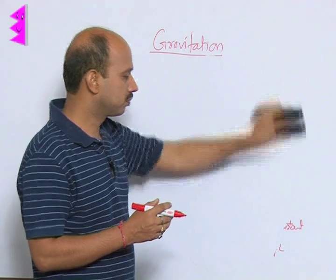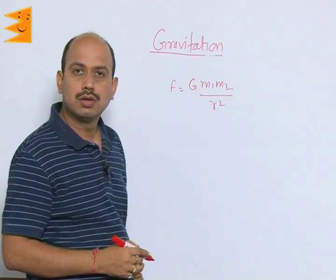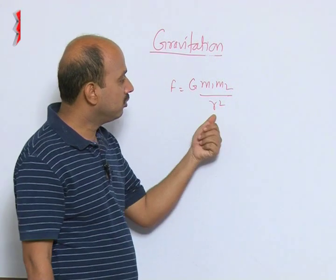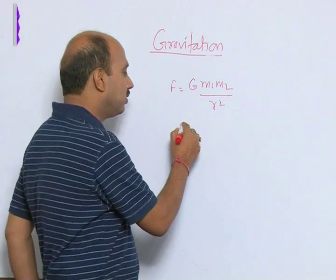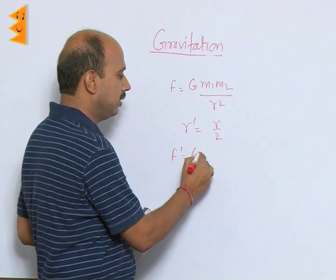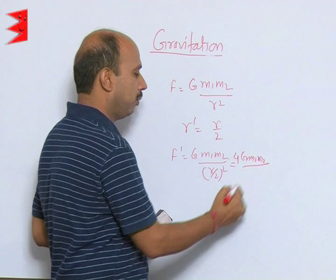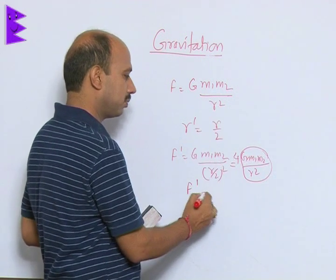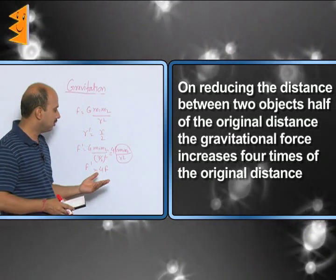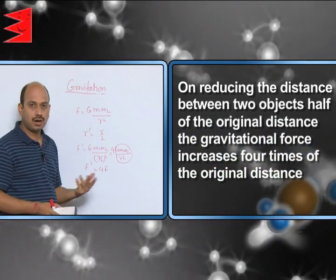Now let's discuss some questions. We have F = G·m₁·m₂/r². What happens if we reduce the distance by half? Gravitational force is inversely proportional to the square of the distance. If the new distance r' = r/2, then F' = G·m₁·m₂/(r/2)² = 4·G·m₁·m₂/r². So F' = 4F. When you make the distance half between two objects, the gravitational force becomes 4 times. It is highly affected by changing the distance.